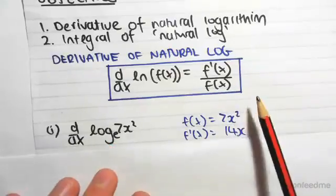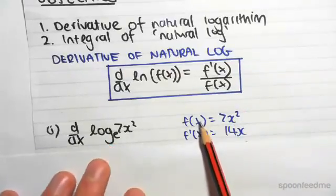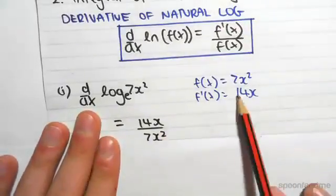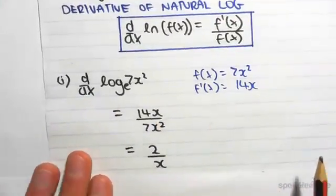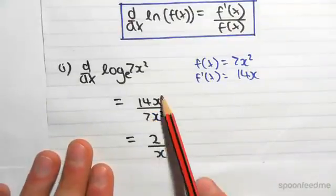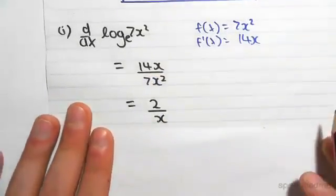We simply just write it in that form with the derivative on top of the original function. So it's going to be 14x, f'(x) on f(x), on 7x². This can simplify: 14 on 7 is 2, x on x² simplifies just to 2/x.